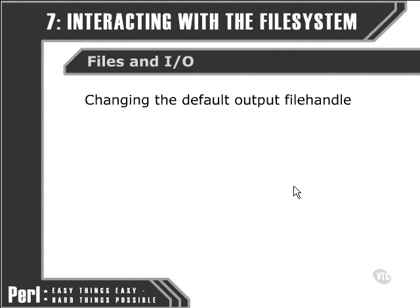One thing you may have noticed about the syntax of writing to a file is that it's very similar to the syntax we've used when writing to the user — showing them some message on the command line. Later on, that will apply to CGI scripting for the web as well, once we get to that point. The function we use is the same: it's the print function.